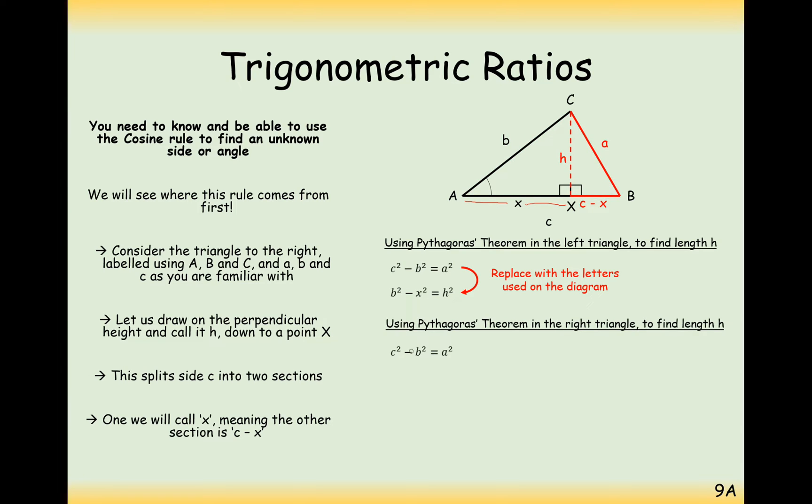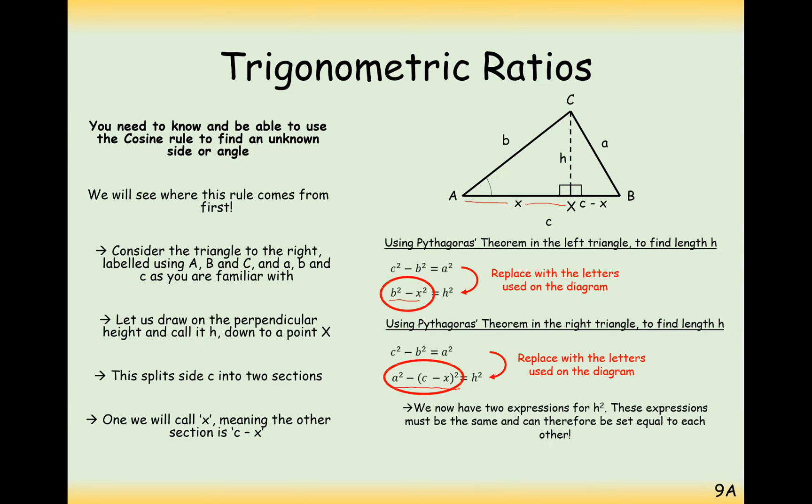So what we need is to find out what this height H here is again. So what we're going to do is then A squared, the hypotenuse, take away this small length down here which is C minus X squared and we work out the height here. Now if both of these expressions equal the height squared then we can effectively set them equal to each other. So B squared minus X squared equals A squared minus C minus X squared.